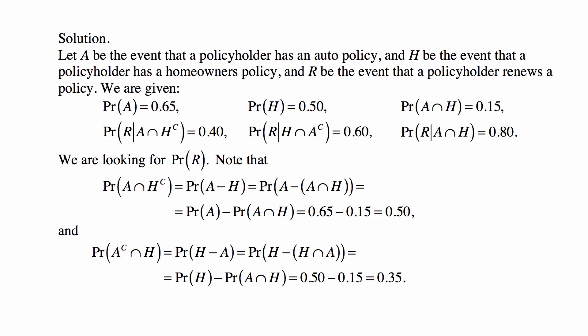Let A be the event that the policyholder has an auto policy, H be the event that a policyholder has a homeowner's policy, and R be the event that a policyholder renews a policy. We are given that Pr(A) = 0.65, Pr(H) = 0.50, and Pr(A ∩ H) = 0.15. The probability of renewal given that a person has auto and not homeowners is 0.40. The probability of renewal given that a person has homeowners and not auto is 0.60. We are looking for the probability of R.